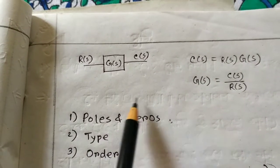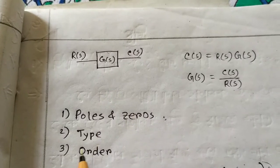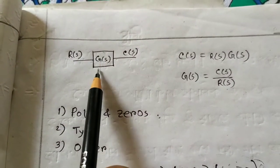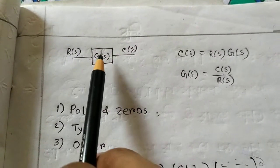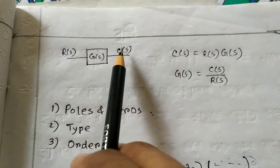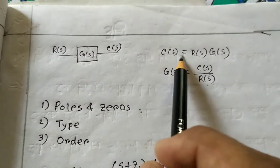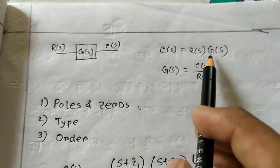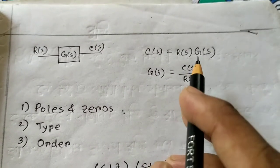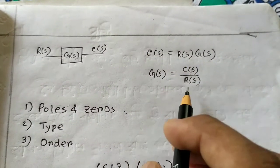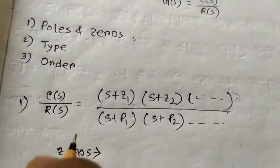Today our topic is transfer function. We have taken a system GS, giving a Laplace input RS and getting Laplace output CS. So if we write the output equation, CS equals RS into GS. Therefore the basic transfer function is GS equals CS by RS.